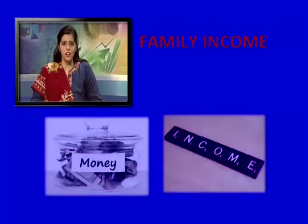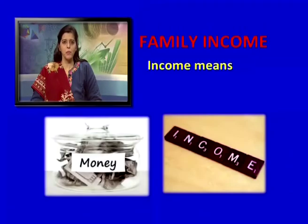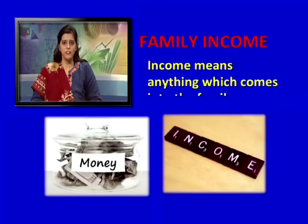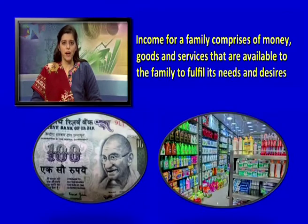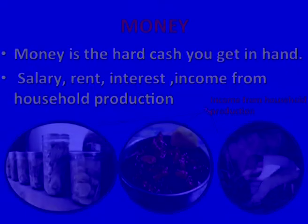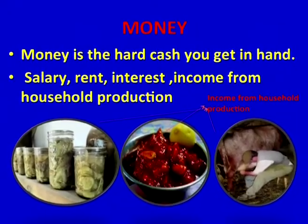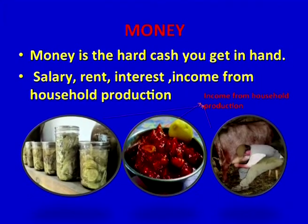Let's understand family income. Income means anything which comes into the family. Income for a family comprises of money, goods and services that are available to the family to fulfill its needs and desires. Money is the hard cash you get in hand. Salary, rent, interest, and income from household production are the ways by which you get money.